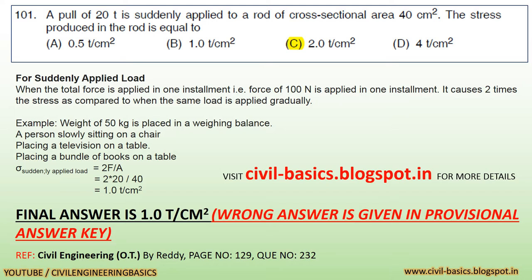Final answer is 1.0 tonne per centimetre square. A wrong answer is given in the provisional answer key. Reference: Civil Engineering by Reddy, page number 129, question number 232.